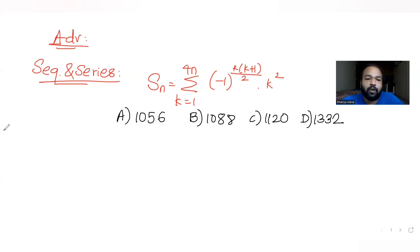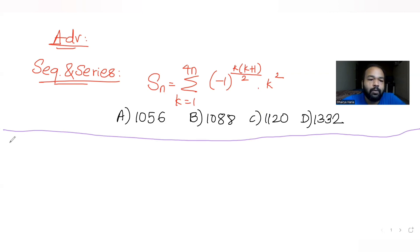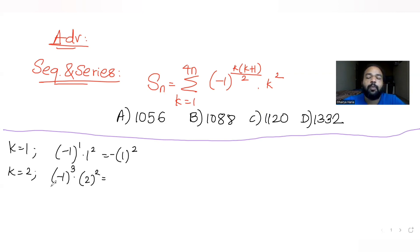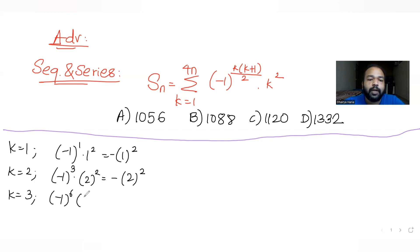Let's solve it. If I take k=1, the expression becomes (−1)^(1·2/2) · 1² = (−1)^1 · 1², which is negative. For k=2, I get (−1)^(2·3/2) · 2² = (−1)^3 · 4, which is also negative. For k=3, I get (−1)^(3·4/2) · 3² = (−1)^6 · 9, which is positive since the power is even, giving +3².